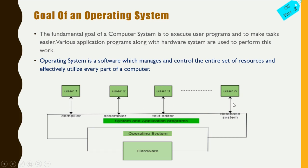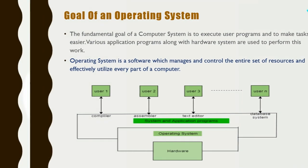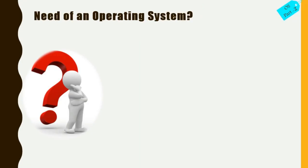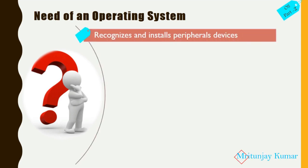Let's see the need of an operating system. There are various reasons why we need an operating system. Number one: the operating system recognizes and installs peripheral devices. Peripheral means all external devices including printer, scanner, joystick, external hard disk, or any external device that we connect to the computer — these are recognized and installed by the operating system.